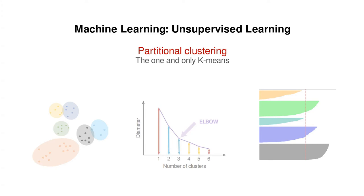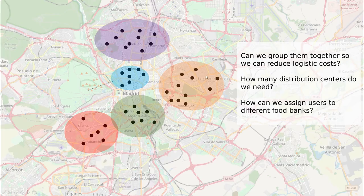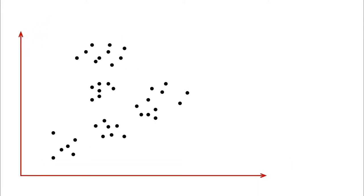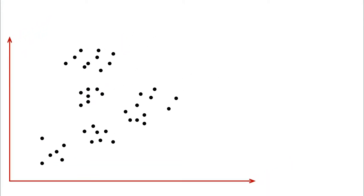Let's start with one of the most exciting methods out there for clustering — it's called k-means, and it's probably the simplest method of partition clustering. Let me illustrate with some examples. We have some points scattered on a map and we want to group them together. This is the k-means algorithm.